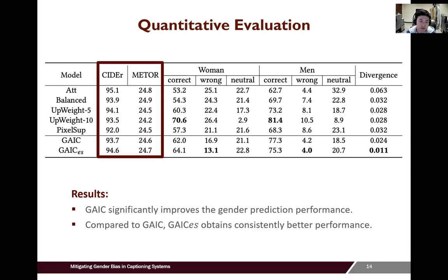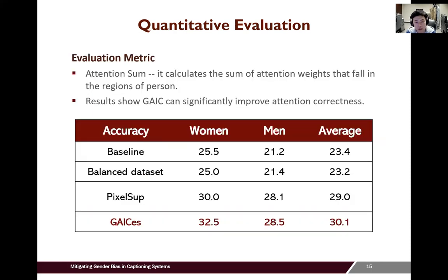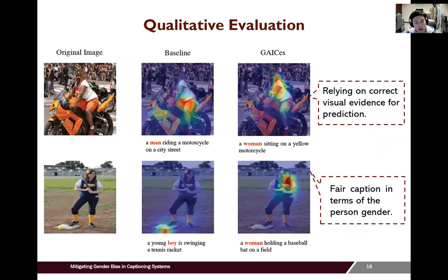Compared to the baseline model, GAIC also maintains competitive caption quality. To measure whether the model focuses on the correct gender features, we calculate the similarity between attention maps of gender words and the person segmentation masks using attention sum, which calculates the sum of attention weights in regions of a person. We show that GAIC learns to concentrate on the regions of the described person for gender word prediction. We also show some qualitative comparisons, observing that the baseline model utilizes biased visual features and makes incorrect gender predictions, while GAIC learns to concentrate on regions of the described person.